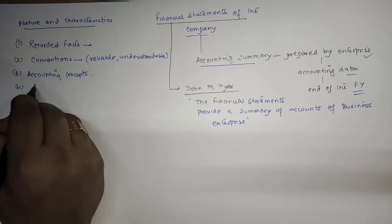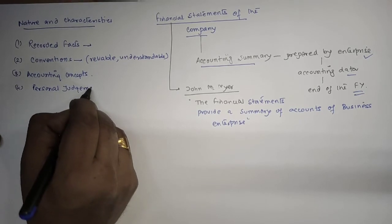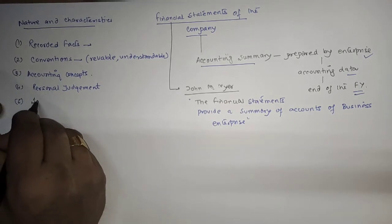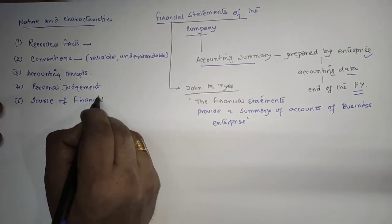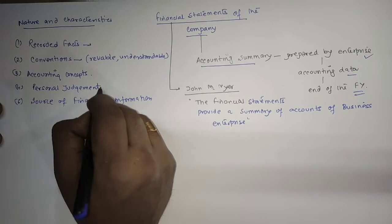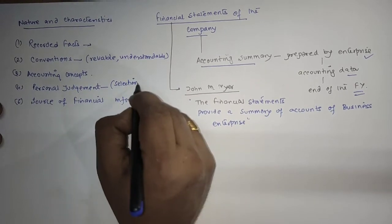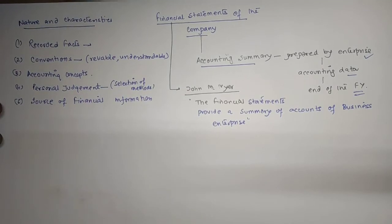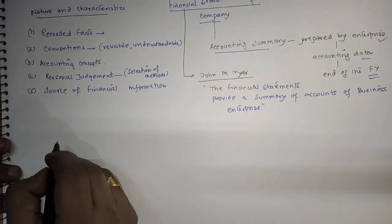It should not be based on personal judgments because that may affect the organization. It is a source of financial information. In the case of personal judgment, the selection of methods in accounting should also be focused. These are the nature and characteristics, and some more points are also there.